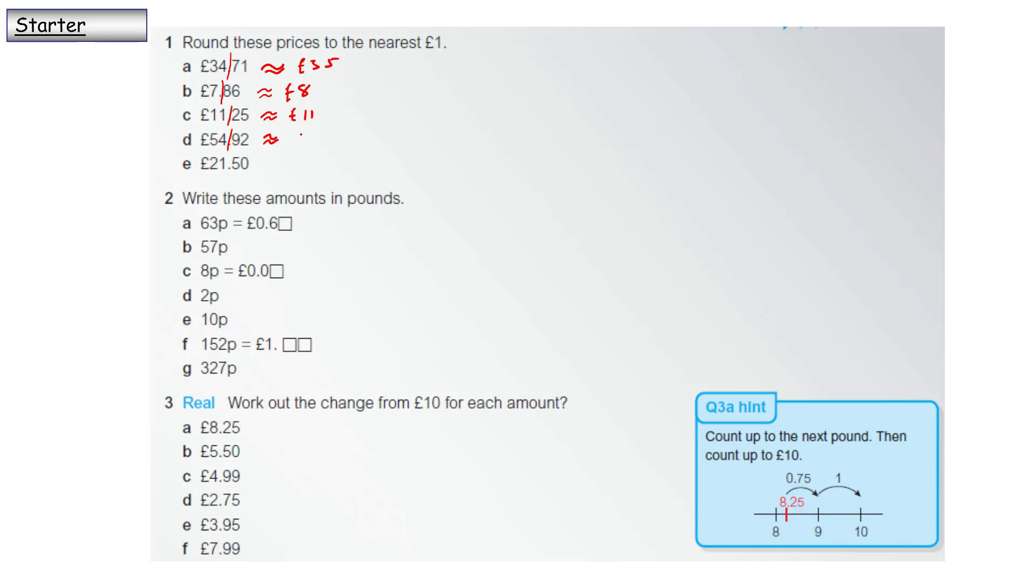Don't forget our approximate symbol. Put our line there. Does the nine affect the four? Yes, it's more than five, so that's going to be £55. £21.50 is going to be between 21 and 22. It's five or above, so that's going to take it up to £22.